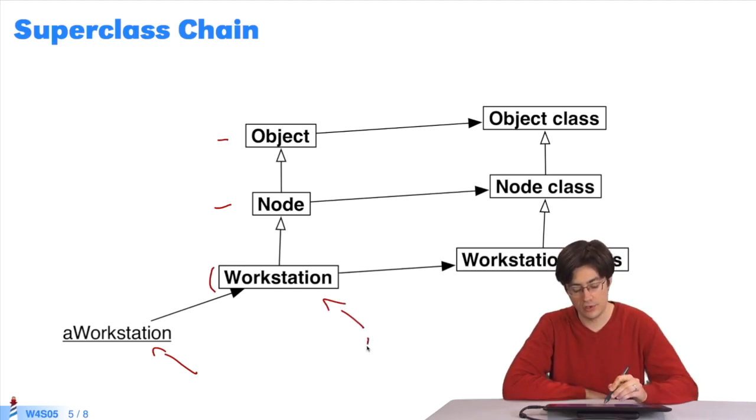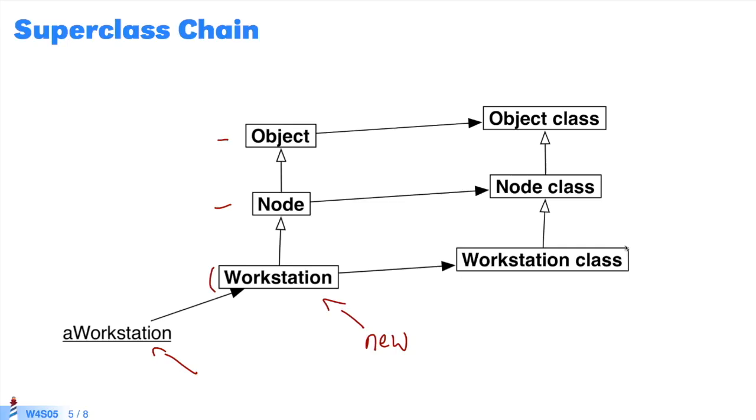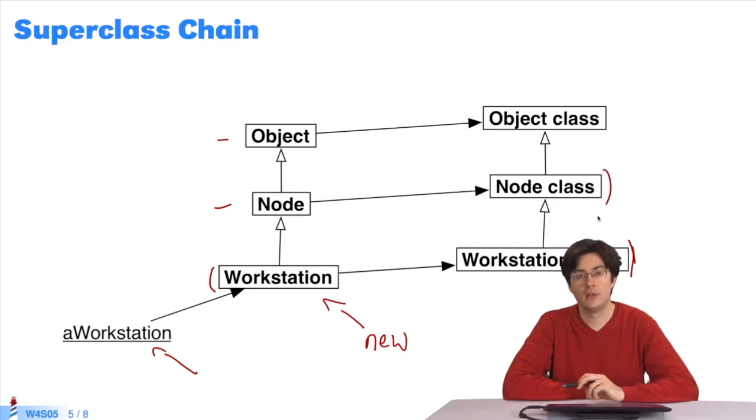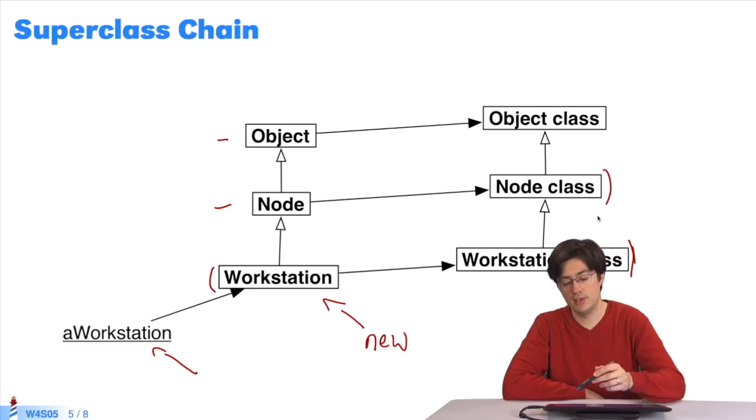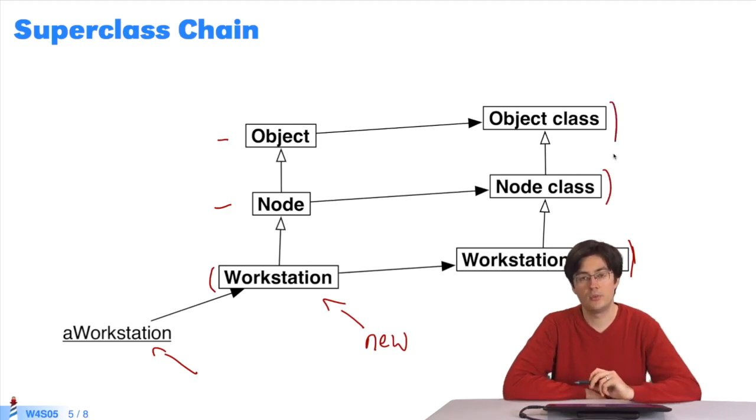For example, if I send the message new to workstation, the lookup algorithm searches workstation class for a method called new. If it finds it here, it executes it. If it does not find a match, it moves up to the superclass, and then up to the next superclass, and so on.